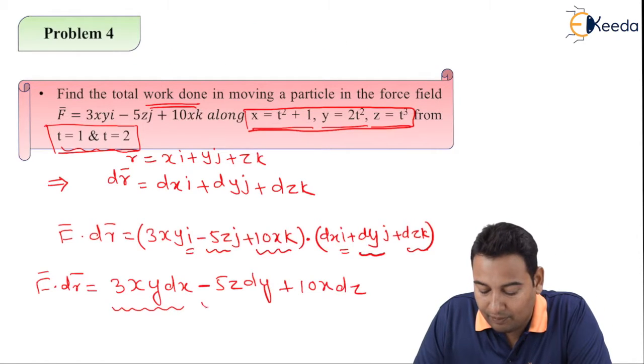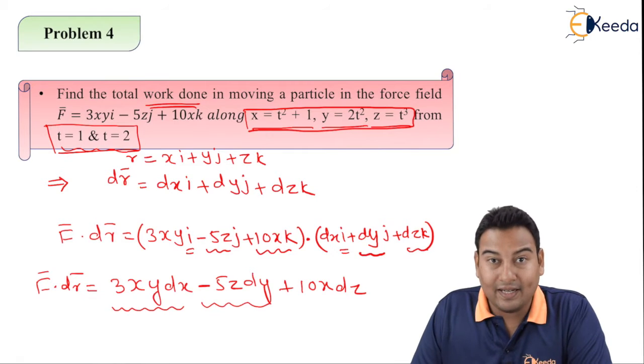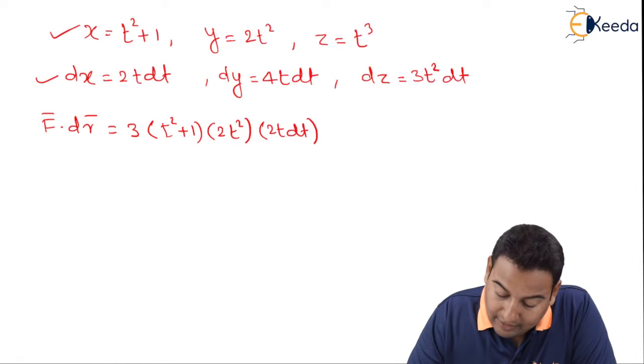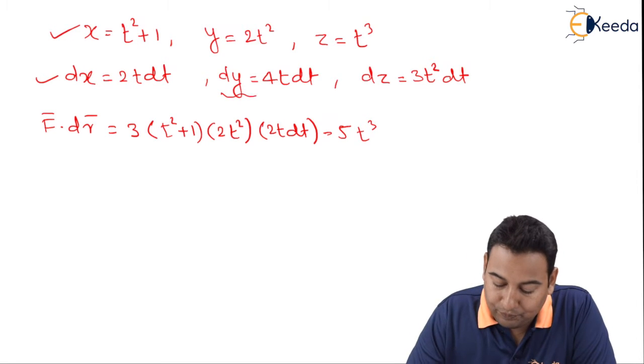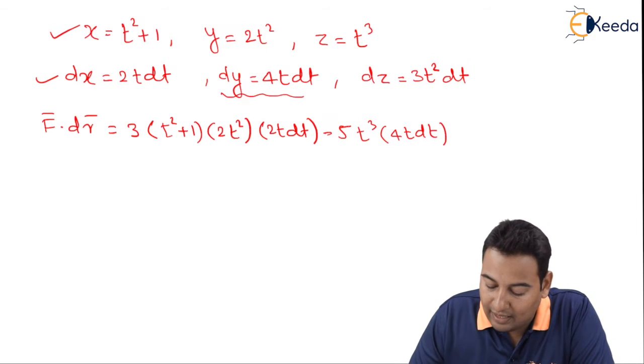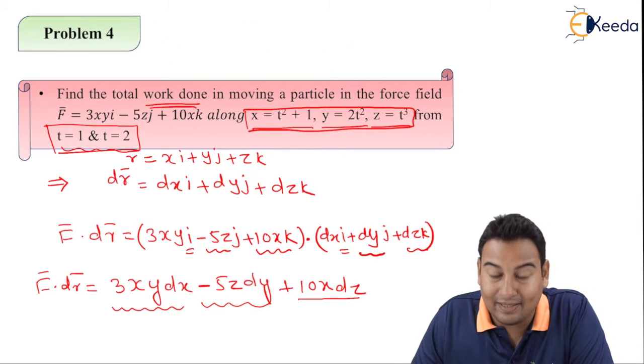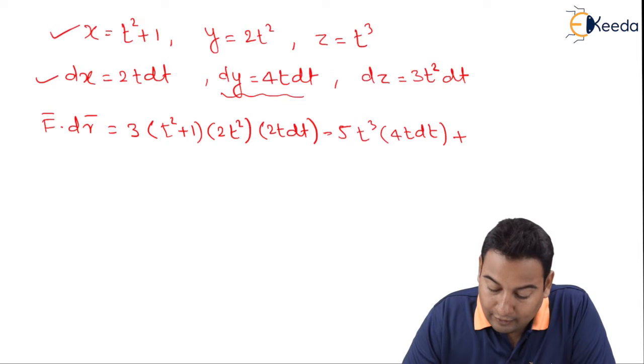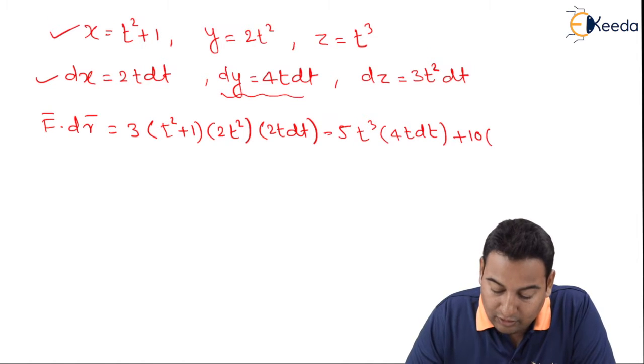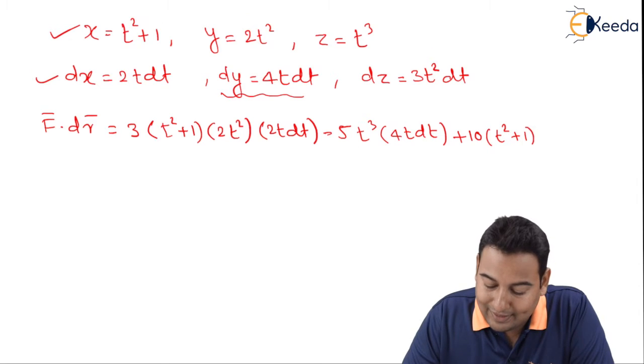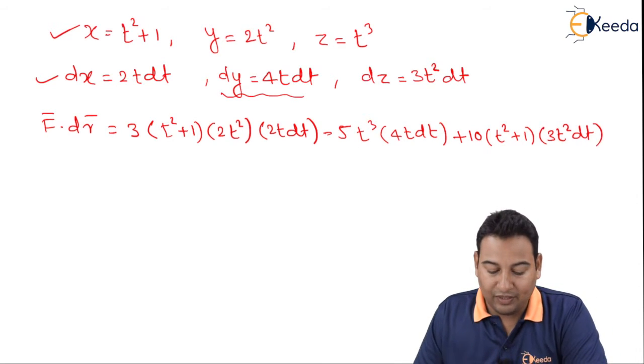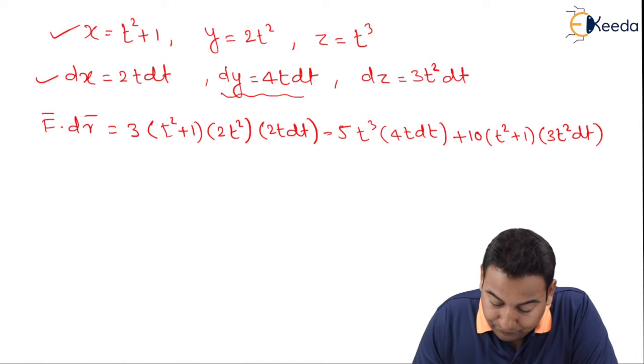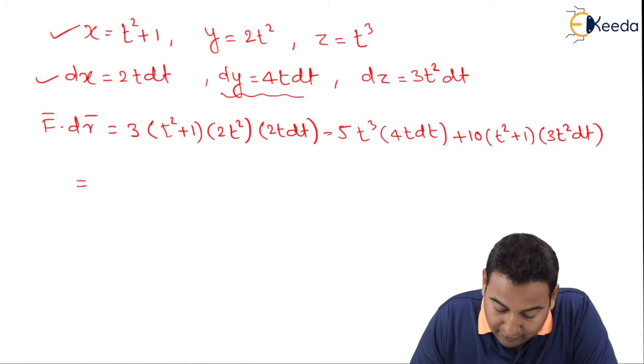Let's replace this term now. Minus 5z dy, minus 5z is t cube and dy is 4t dt. Let's replace the last term, that is 10x dz. 10x, x is t square plus 1 into dz, dz is 3t square into dt.